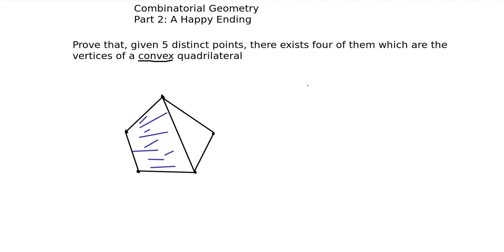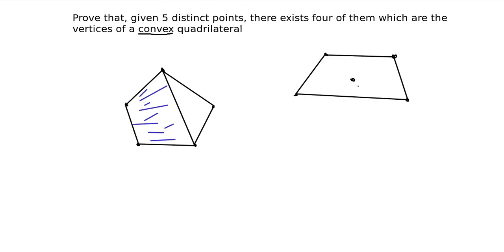The same goes if the five points has a convex hull of a convex quadrilateral, because obviously that convex hull is the quadrilateral we are looking for. So if the points are organized like this, then we can draw the polygon like so, and we see that obviously this quadrilateral is the one we are looking for because it's convex by definition.